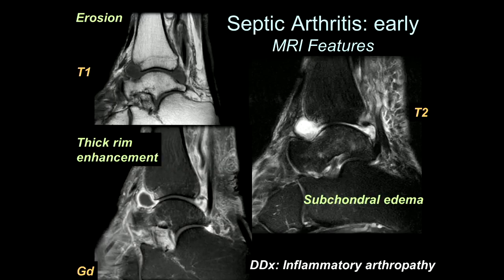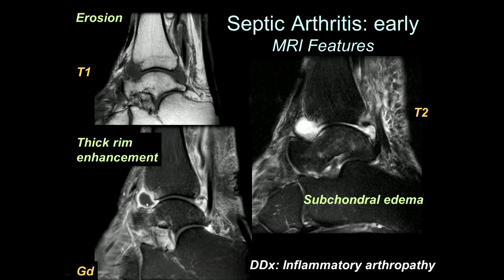Hematogenous infection can also be deposited in the joint, leading to septic arthritis. The early MR features include joint effusion, synovitis with complex fluid, and erosions at the edges or bare areas that are unprotected by a cartilaginous surface. If you give contrast, you'll see thick rim enhancement. The important thing to know is that this can look a lot like any other inflammatory arthropathy, including gout, rheumatoid arthritis, or other conditions. But it's very important, if there's an unexplained joint effusion, to always consider the possibility of septic arthritis.